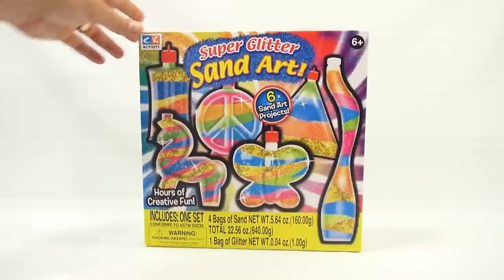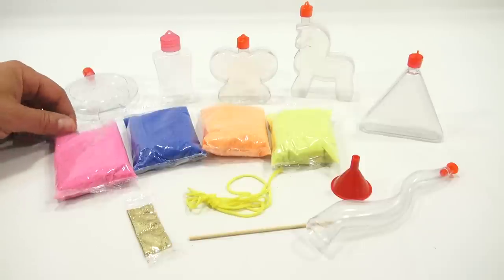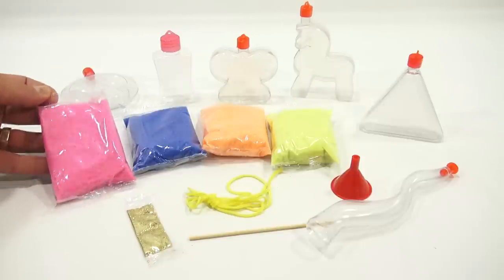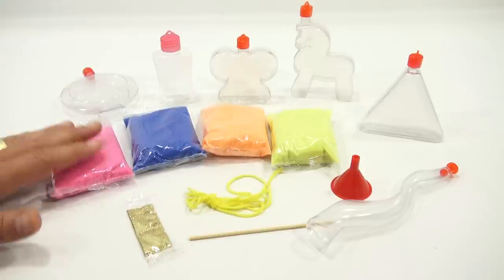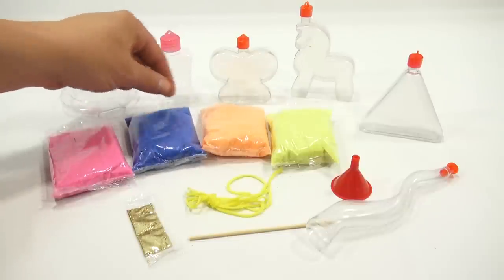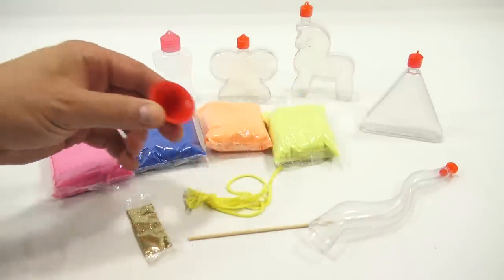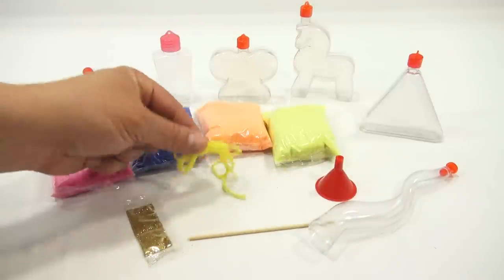Here's everything that was in the box. Let's start with the sand: you get a nice pink sand that looks like it's got glitter in it, blue, orange, and yellow. You've got your little funnel that you can use to fill, and the cord that ties on the top if you want to hang one of your bottles.